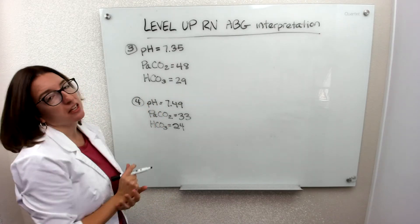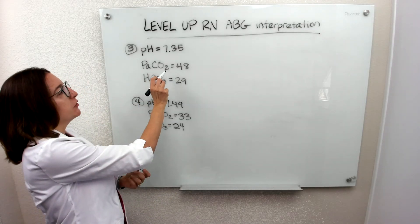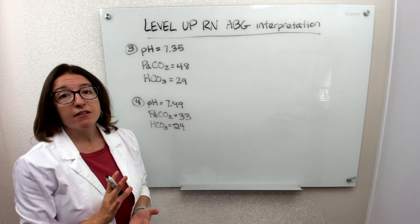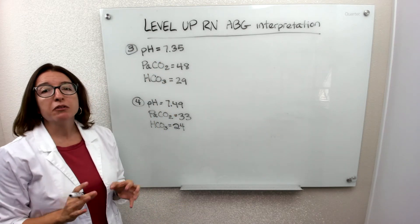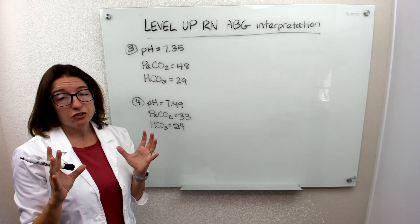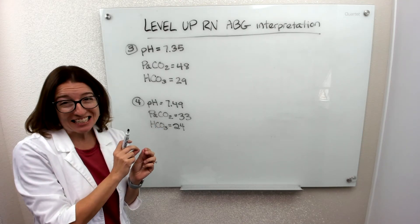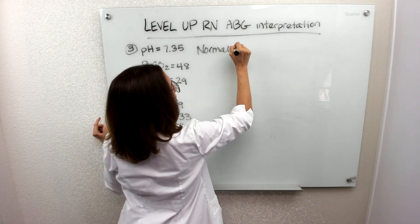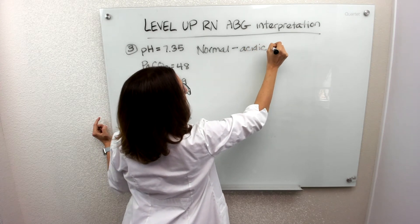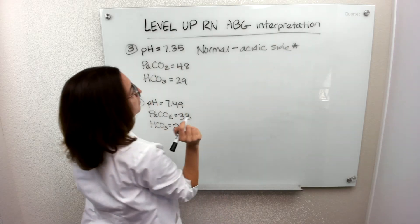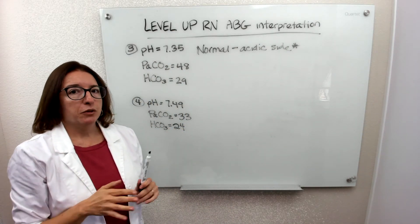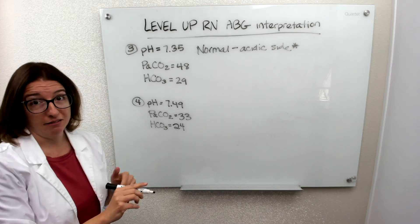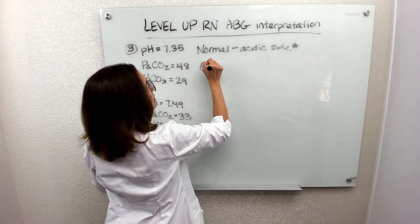Problem 3: pH is 7.35, PaCO2 is 48, and HCO3 is 29. Let's first look at the pH to see if we have acidosis or alkalosis. You'll notice that 7.35 is within the normal range for pH, but it is on the acidic side. So we have a normal pH, but we note that it is on the acidic side. PaCO2 is 48, which is out of range on the acidic side, so we have some respiratory acidosis going on.